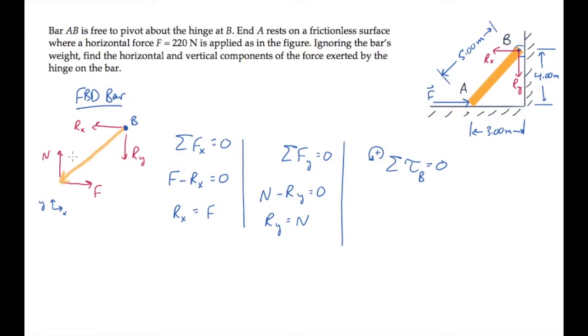So we just need to calculate the torques due to the force F and the normal force N. Let's do the force F first. Here's its R vector. Putting the right hand fingers in that direction and curling them towards the force F shows that the torque is positive. The right hand thumb is directed out of the screen, with a force of F and a moment arm of 4 meters. That's the shortest distance between this line of action and the pivot, the length of this vertical blue line.